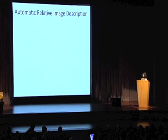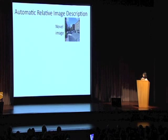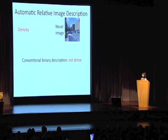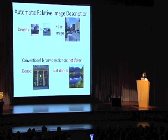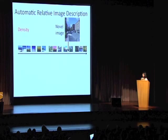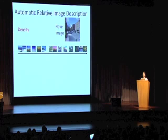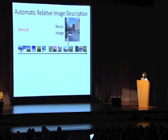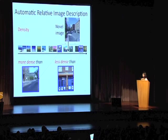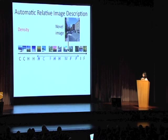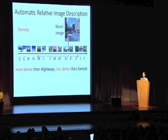The next application is automatically generating descriptions of images. For an image we wish to describe in terms of 'density', a binary description would simply call it 'not dense'. But if density has been learned relatively, we sort all images by predicted density value, look at a preselected number to its left and right, and describe the image as more dense than one image but less dense than another. We can also describe it in terms of categories: more dense than highways but less dense than forests.